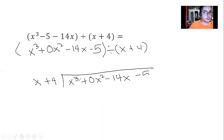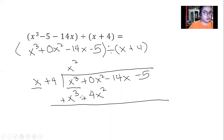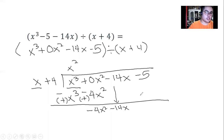The first term of the dividend is x cubed and the first term of the divisor is x, so dividing gives x squared. We multiply x squared with the divisor: x cubed, and 4 times x squared gives 4x squared. Since both are positive, we change the signs, then simplify and bring down the next terms of the dividend.